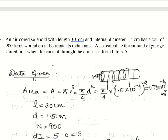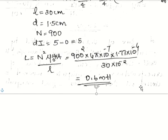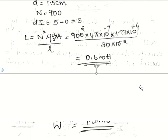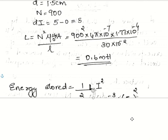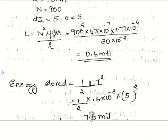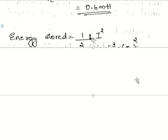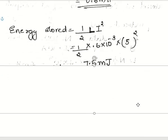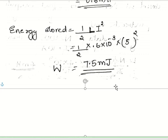To calculate the energy stored, use W = ½LI². Substituting: L = 0.6 millihenry, I = 5 ampere. Energy W = ½ × 0.6 × 10⁻³ × 25 = 7.5 millijoule.